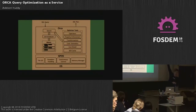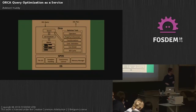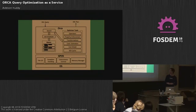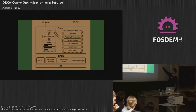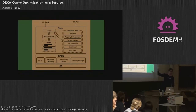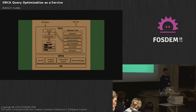Orca uses something called DXL to communicate with the database. If above on the screen is the core of the database — by the way, these slides are available online — it communicates over DXL. We get a DXL representation of the query, allocate some memory to do our calculations, look at the operators necessary, do the transformations, and we have libraries in there for cardinality estimation and our cost model. Once we have a good plan, we send it back to the database and it executes. It communicates over this DXL layer.